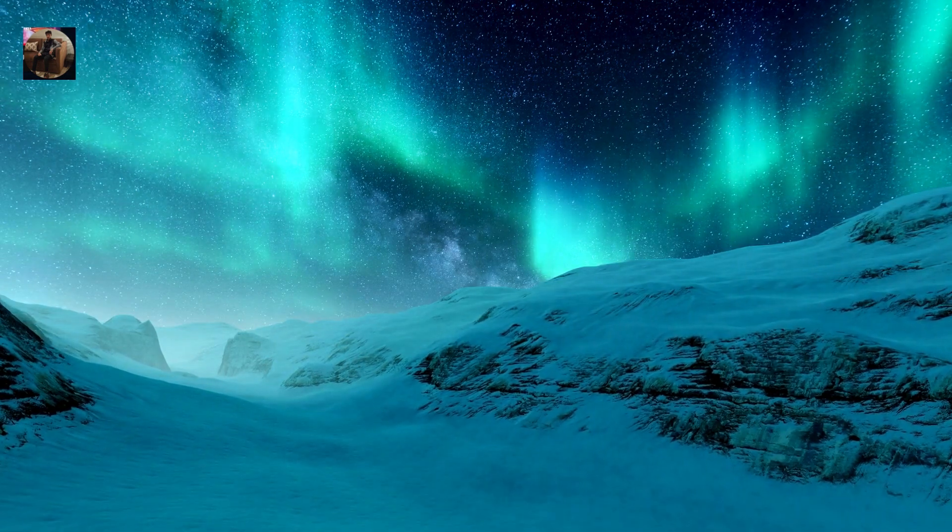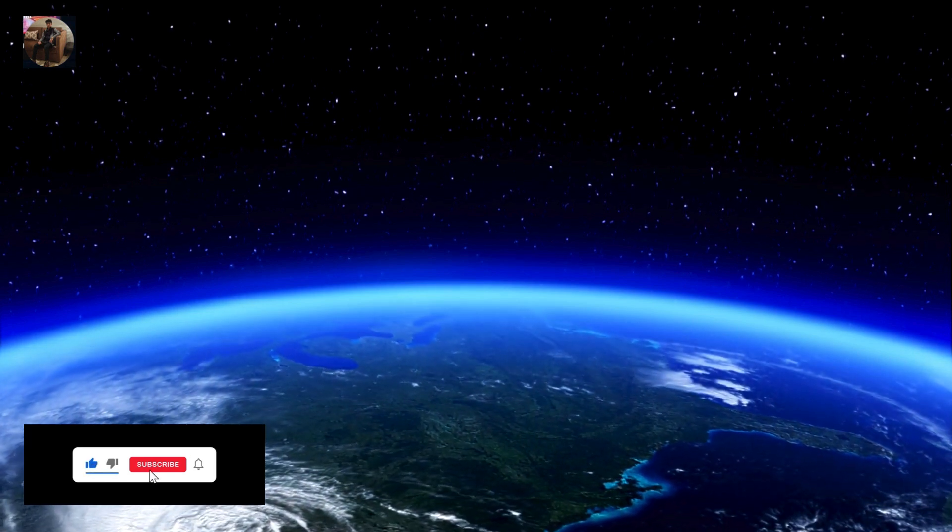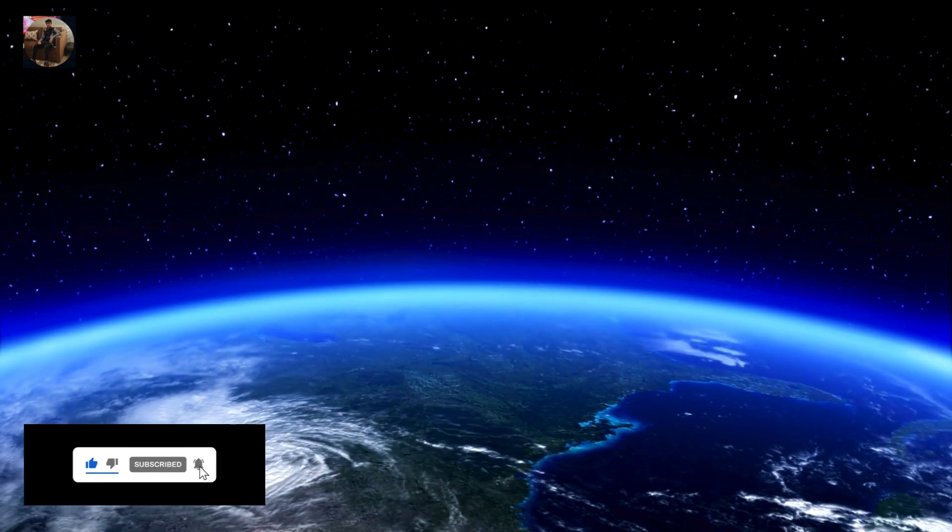Finally, the exosphere is the outermost layer where the atmosphere gradually fades into space. Satellites orbit here, helping us communicate and study our planet.